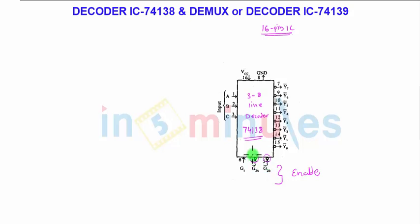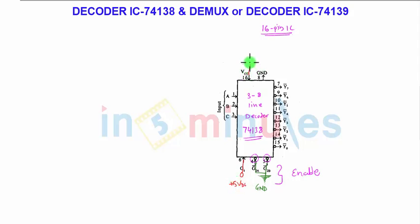G2A-bar and G2B-bar are logic low or bubbled inputs, so they should be connected to ground. G1 should be connected to VCC — that is, plus 5 volt DC supply — to activate the IC. Pin 16 is connected to plus 5 volt DC supply.